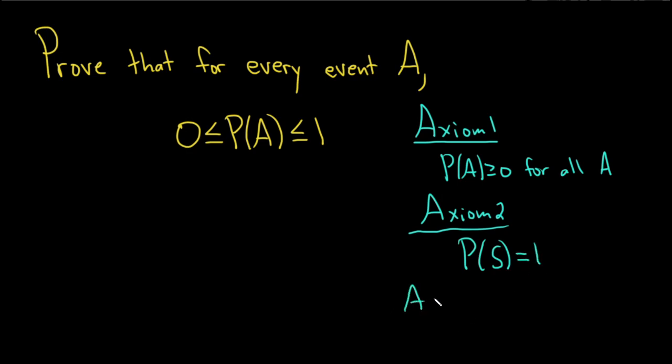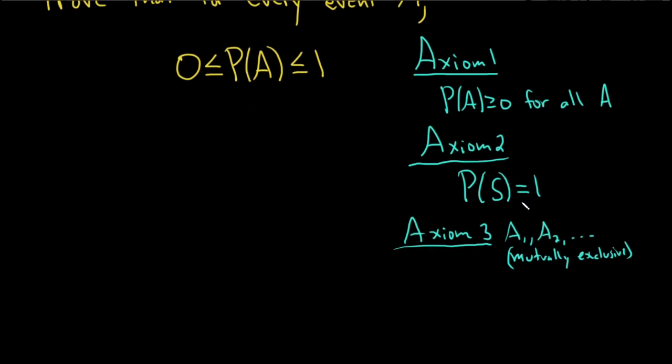And the third axiom says if you have some mutually exclusive events, these all have to be mutually exclusive, then when you take the probability of the union of these events, you just get the sum of the probabilities. So P of A1 plus P of A2, etc.